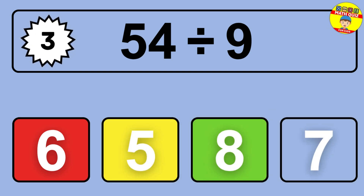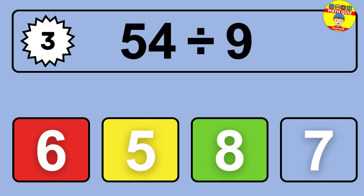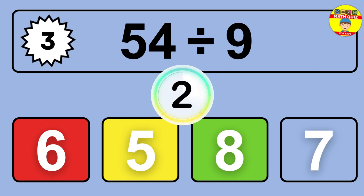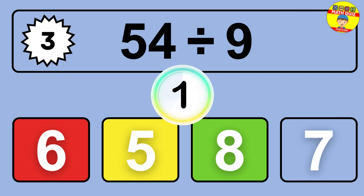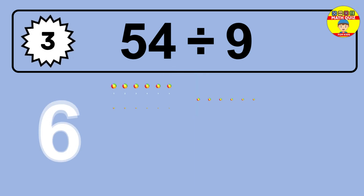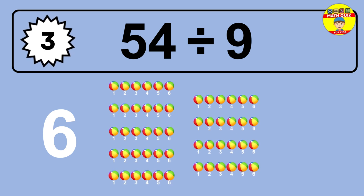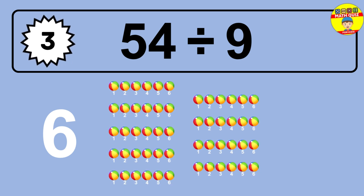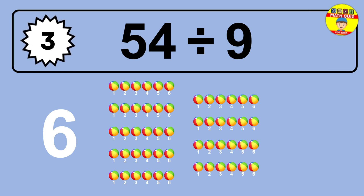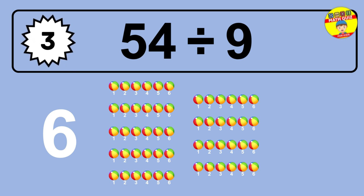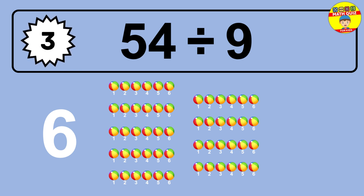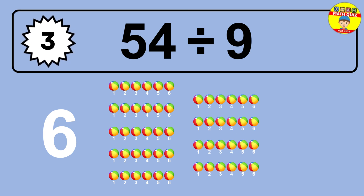54 divided by 9 is... time to think. Let's go to the solution. Divide the number 54 by 9. Each group contains 9 units, so dividing 54 by 9 results in 6 equal groups. Thus, the result is 54 divided by 9 equals 6.